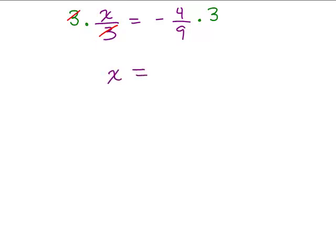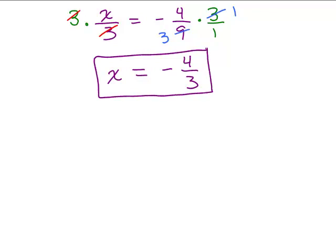Well, I could think if this is 3 over 1 and see, the 3 and the 9, you can divide each by 3. So that's 1 and that's 3. So I get X equals negative 4 thirds. Make sure you realize you've got a negative times a positive, negative 4 thirds. So that's the first method.